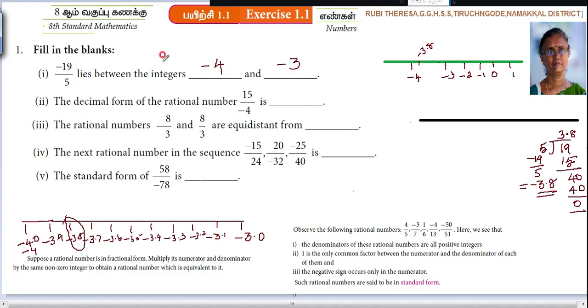So it lies between minus 4 and minus 3. Minus 19 by 5, what does it indicate here? Minus 4 and minus 3. Do you follow everyone? Next one is the decimal form of the rational number. So decimal form. What you should do?